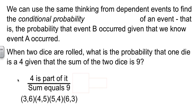Well, the only ways to get a sum of nine is with a three and a six, or a four and a five, or a five and a four, or a six and a three. Those are the only ways I can get a nine. So there are four ways to get a nine. Out of those four, two of them have a four involved. So two out of four is one half.